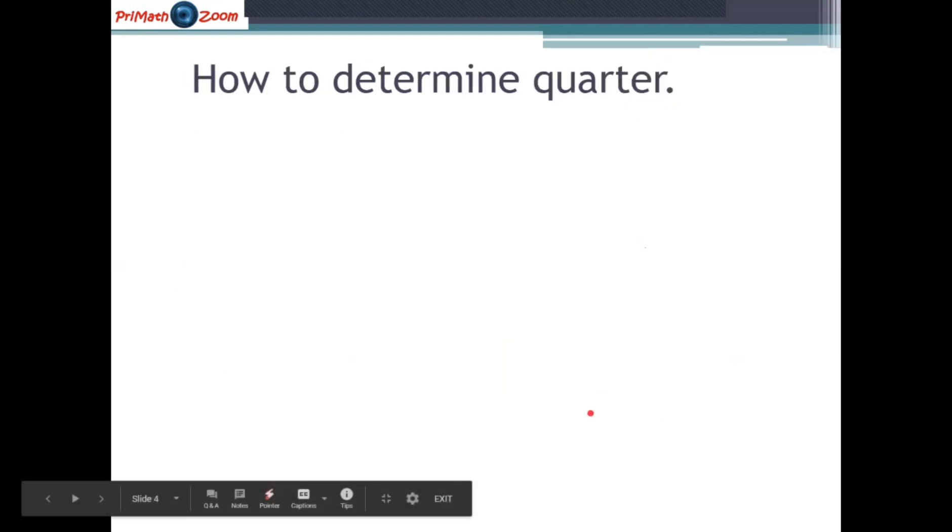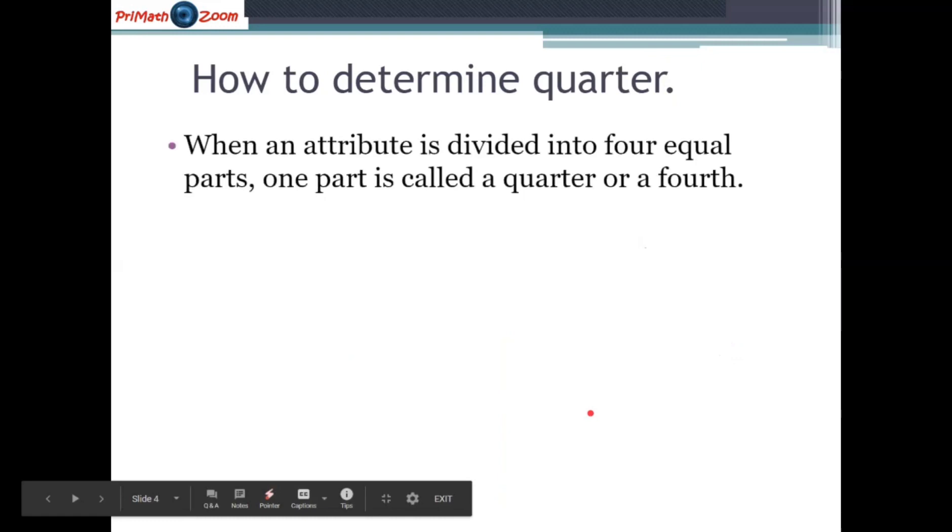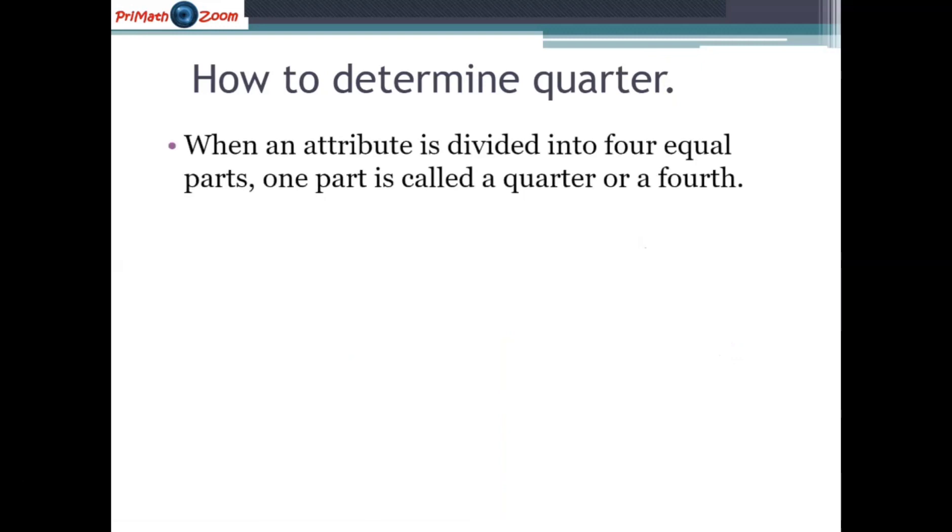How can we determine quarter? This is when an attribute is divided into four equal parts and one part is now called a quarter or a fourth. Like this.